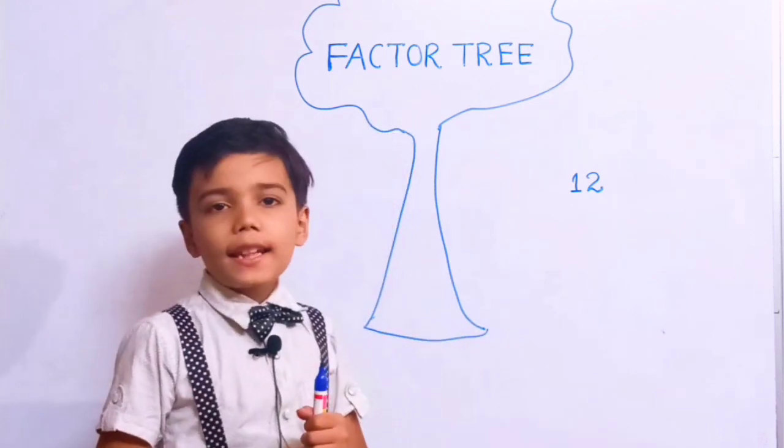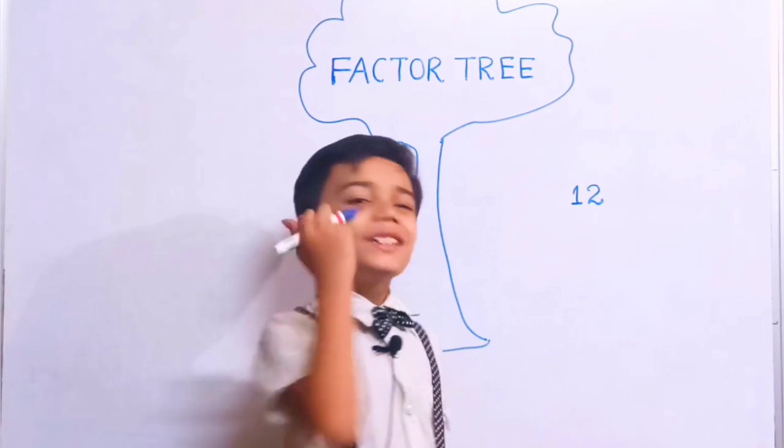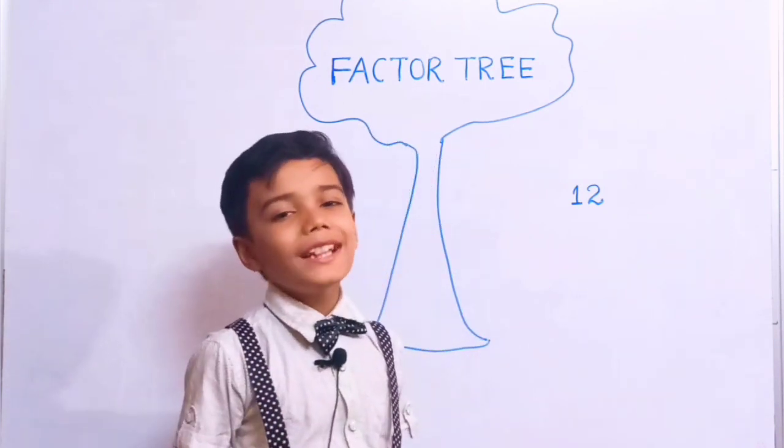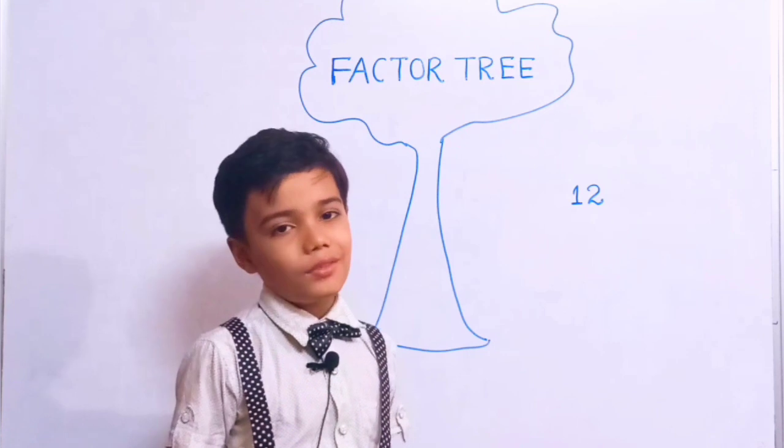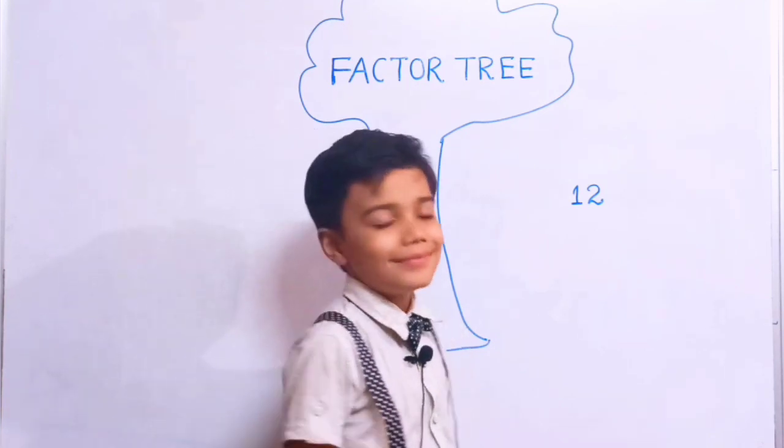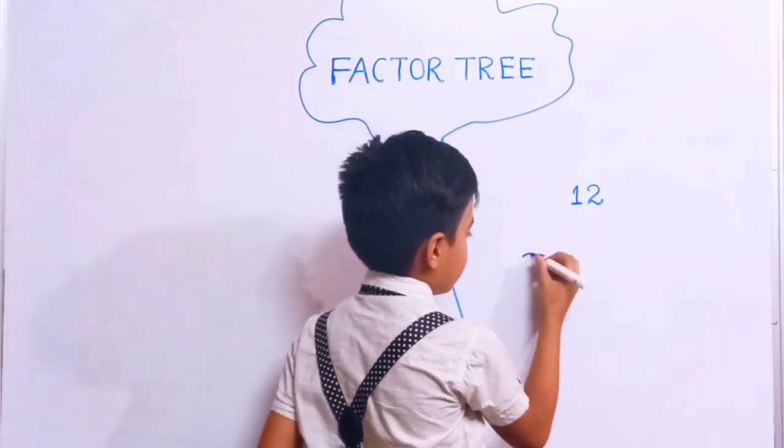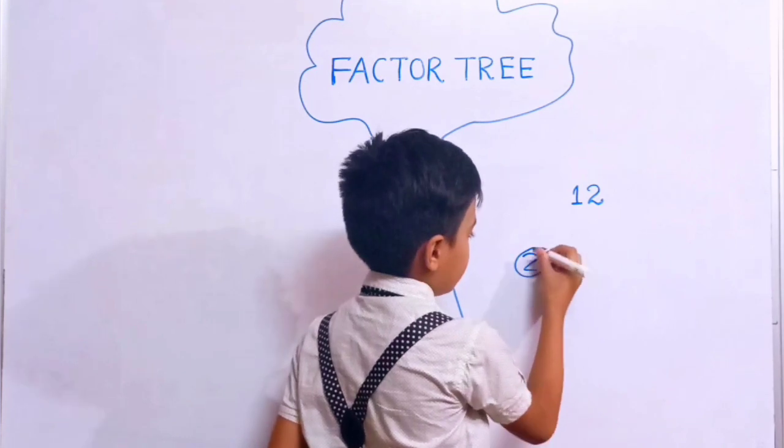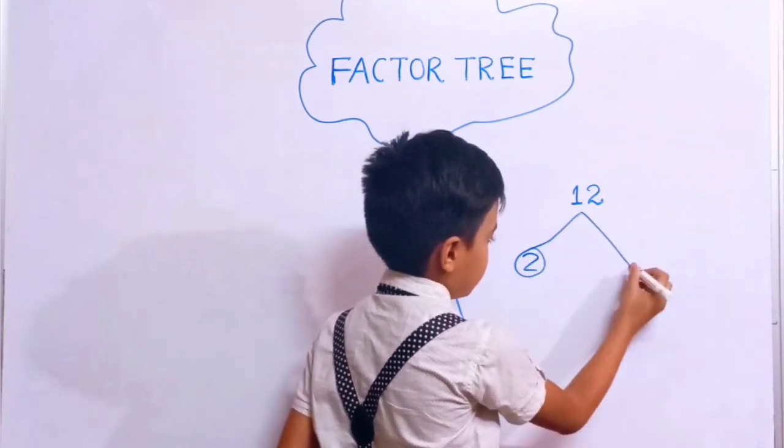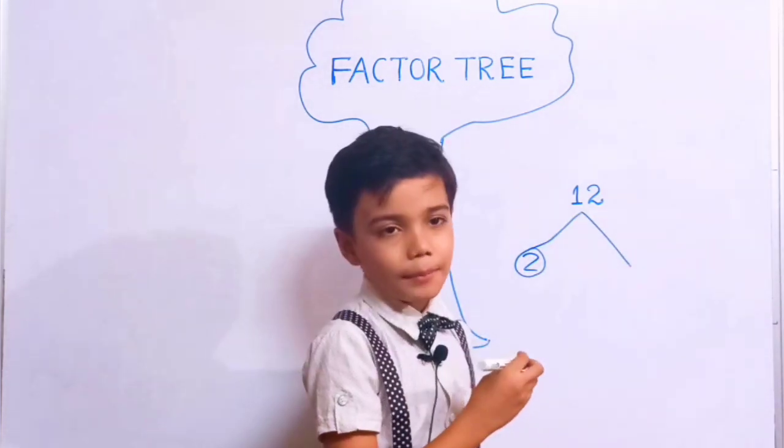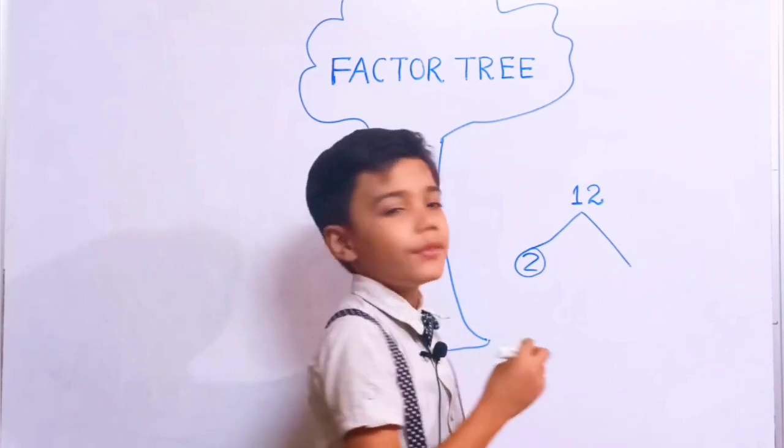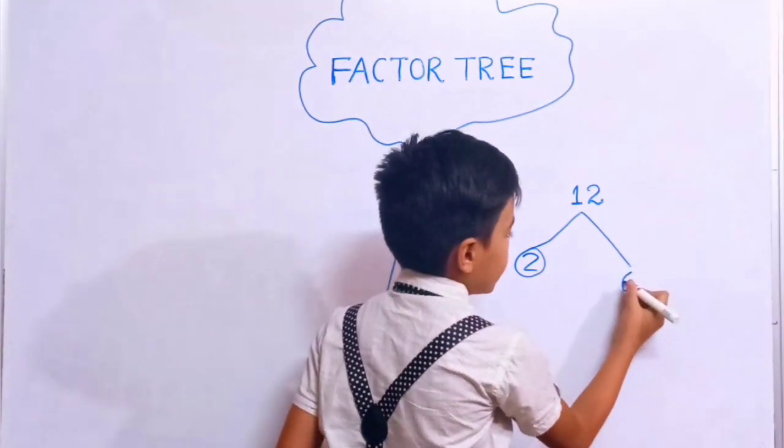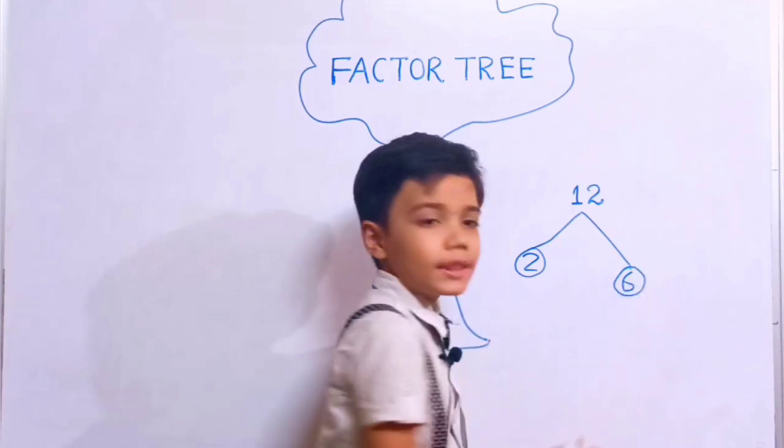Let's take an example number 12. Think of a prime number which is divisible by 12. 2 is our prime number which is divisible by 12. 2 into 6. 6 is our composite number.